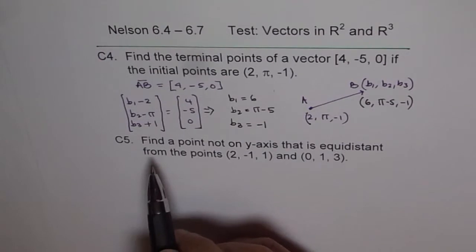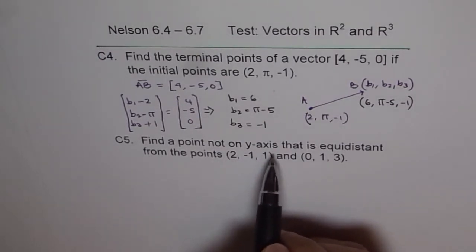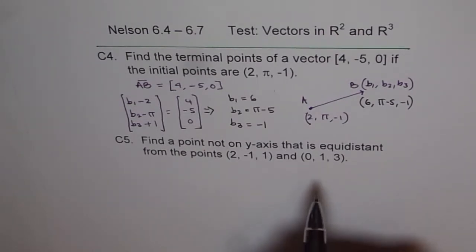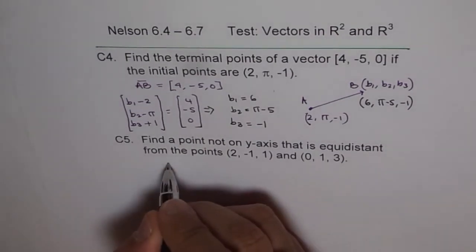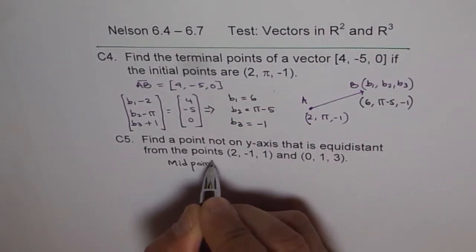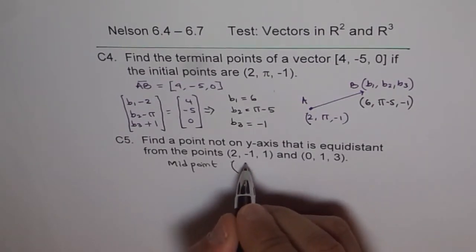C5. Find a point not on y-axis that is equidistant from these two points. Well, the midpoint will always be equidistant. So let's try to find what the midpoint is.